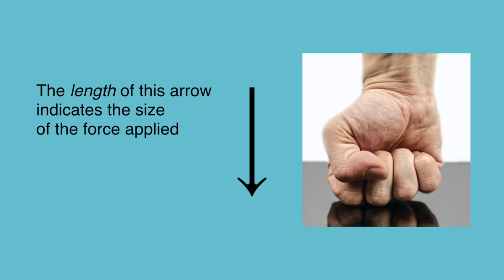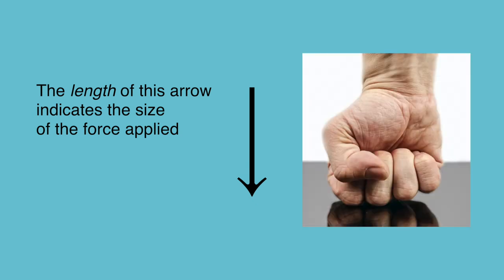Take this vector, for example. It has a certain length, which shows the size of the force delivered by that ferocious punch. You may have heard this referred to as magnitude, which is the more grown-up term.